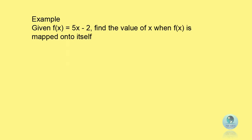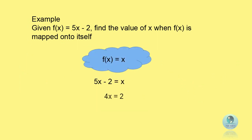Now, let's look at the third example. Given function f(x) equals to 5x minus 2, find the value of x when the function f(x) is mapped onto itself. To answer this question, you need to understand: when f(x) is mapped onto itself, it means f(x) equals to x. Therefore, 5x minus 2 equals to x, and you get the answer x equals to one half.